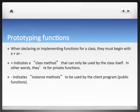Prototyping functions. When declaring or implementing functions for a class, they must begin with a plus or a minus. The plus indicates a class method that can only be used by the class itself. In other words, they're for private functions. Private functions means they're not public functions. The minus indicates instance methods to be used by the client program, which are public functions. A plus would be used for something like object allocation, a constructor, which is the only thing I've seen someone really use it for. Primarily, the ID is a class in this case.